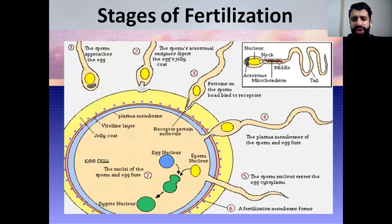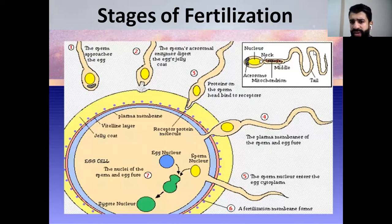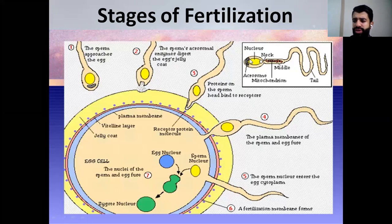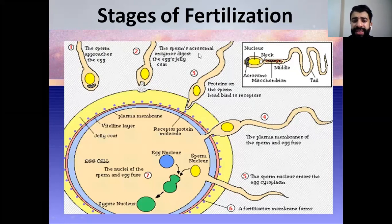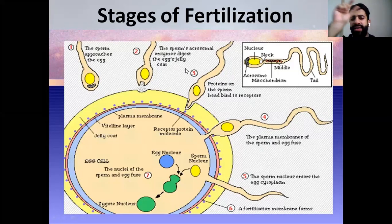Now, stages of fertilization. As you see in the figure, fertilization occurs in different stages and steps. First, you have to know the structure of the sperm cell. It has the tail, or flagellum. This is the midpiece, containing the mitochondria as the source of energy. This is the neck of the sperm. And here we have the acrosome, responsible for the acrosomal reaction, which we will talk about in the coming slides. First, the sperm will approach the egg cell, and the sperm's acrosomal enzymes, found inside the acrosome, have a role in digesting the egg's jelly coat.